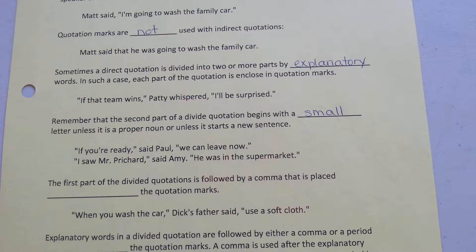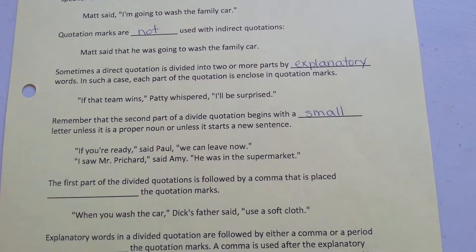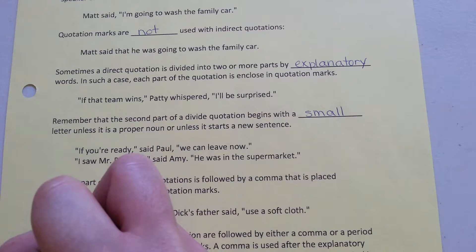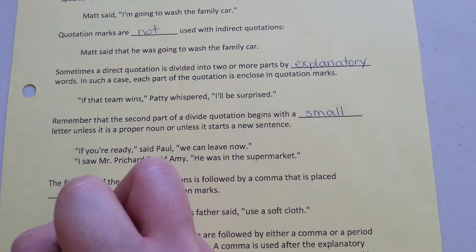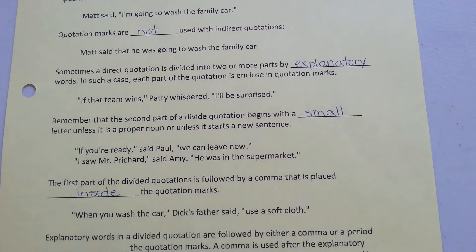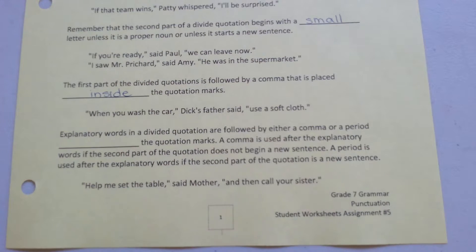In the first part of a divided quotation, it is followed by a comma that is placed inside the quotation marks. For example: "When you wash the car," Dick's father said, "use a soft cloth."